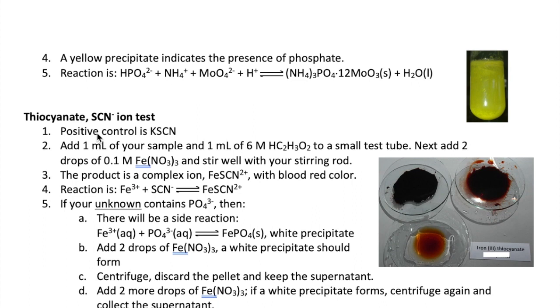Okay, the next test is for the thiocyanate ion, which uses potassium thiocyanate as the control. Here, we will do a reaction you should be familiar with, the complex ion formation of iron thiocyanate as shown here. You will add acetic acid to your sample, then two drops of iron nitrate.